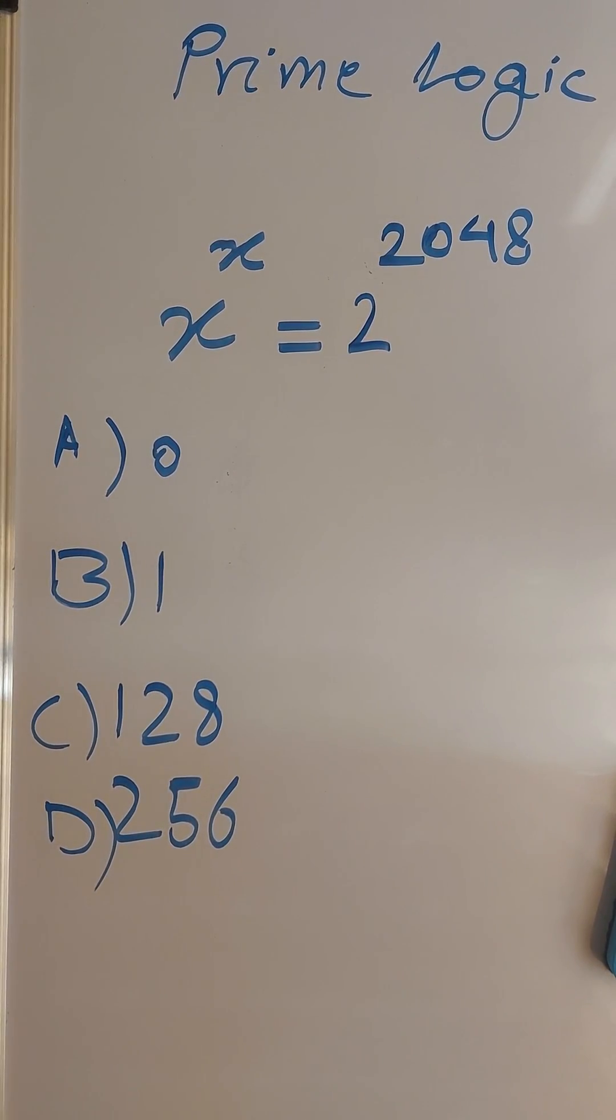All right, here is your daily dose of challenge on Prime Logic. Today, a tricky SAT question which a lot of students got wrong. So x to the power of x equals 2 to the power of 2048. What is the value of x?